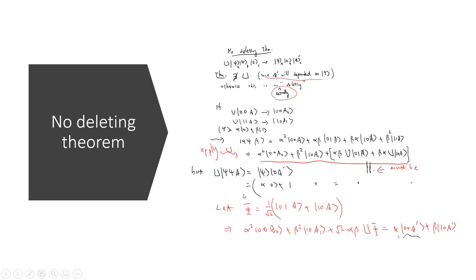By definition, U|ψ⟩|ψ⟩|a⟩ should equal |ψ⟩|0⟩|a'⟩. Let's find the cross terms: consider |φ⟩ = (1/√2)(|0⟩ + |1⟩). Compare the two expressions — this result must equal the definition of |ψ⟩|0⟩|a'⟩, which is α|0⟩|0⟩|a'⟩ + β|1⟩|0⟩|a'⟩. This is the key identity we will use.